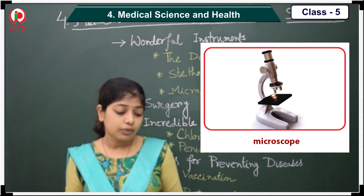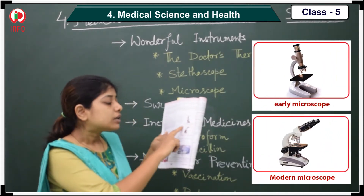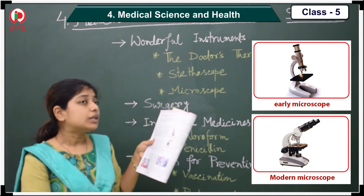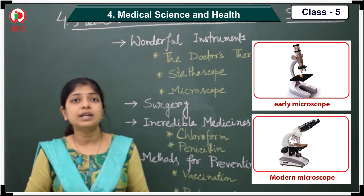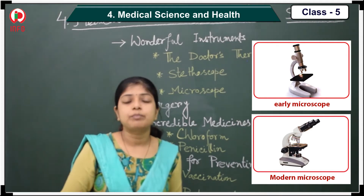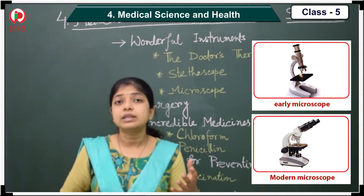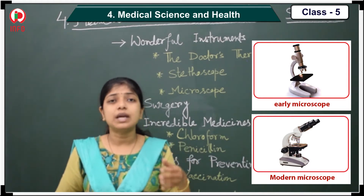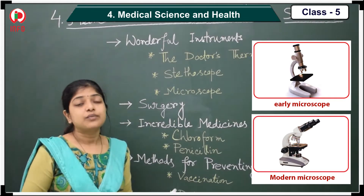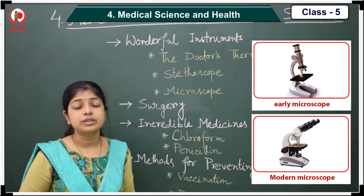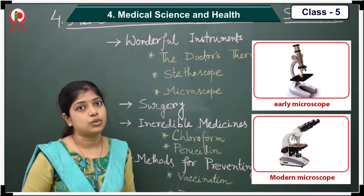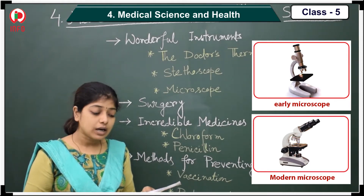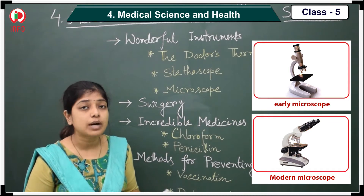Here is the early microscope, and this is the modern microscope. The microscope was not invented in a single day. In the prior age, people didn't know what a microscope was or how to use it — day by day it was invented. The first microscope developed was an optical microscope, in the year 1590, by Hans Lippershey and Zacharias Janssen.